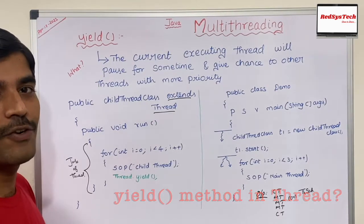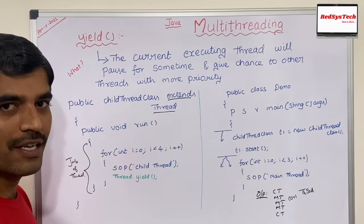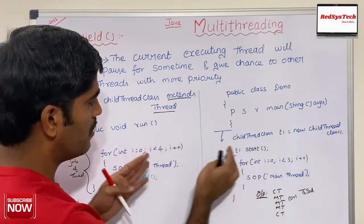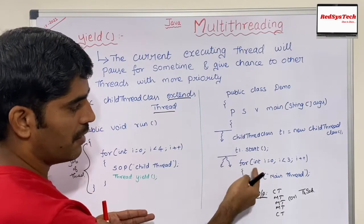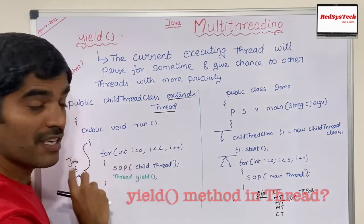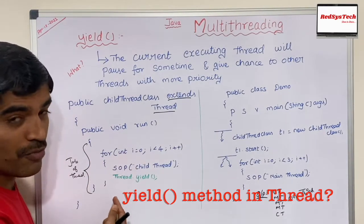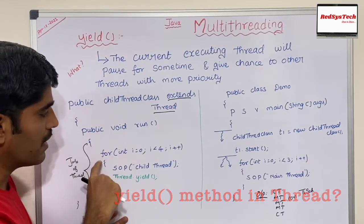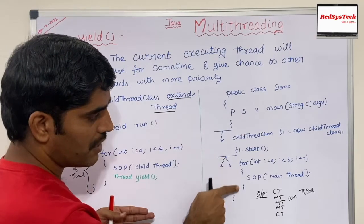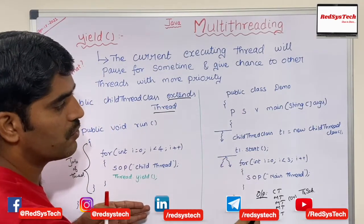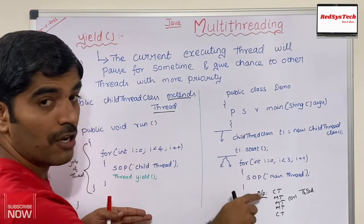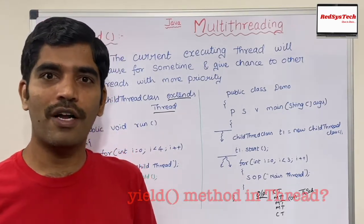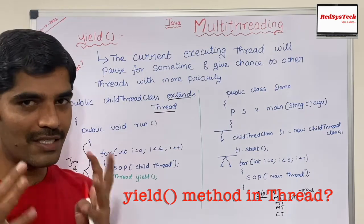To summarize: yield is a static method in the Thread class created by Oracle developers. As a developer we simply use it. In your child class you write a run method with the thread's job. In the main class you create an object of the child thread class and start it. When you call Thread.yield(), the current executing child thread checks if any thread is waiting — if yes, it gives that thread a chance to complete, then resumes.